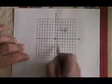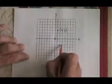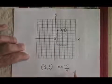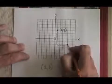And my run is 4. I still go to the right. I don't go to the left. The denominator is positive. I found a second point that's on my line.